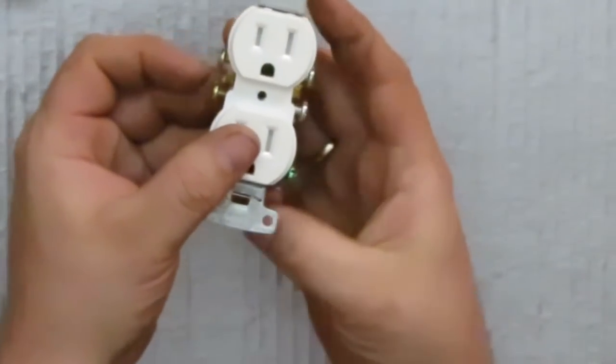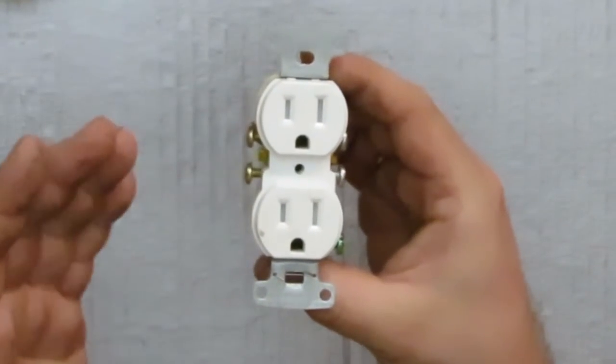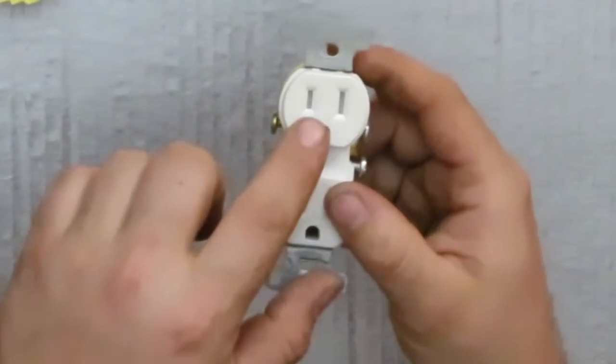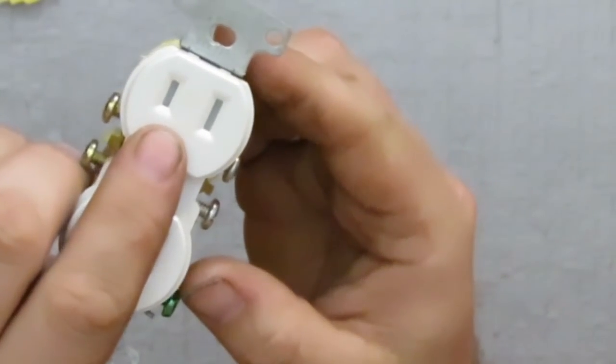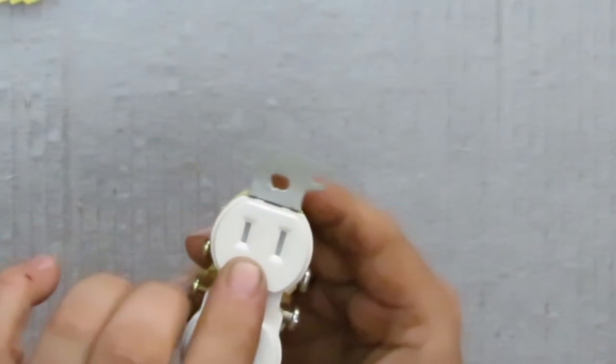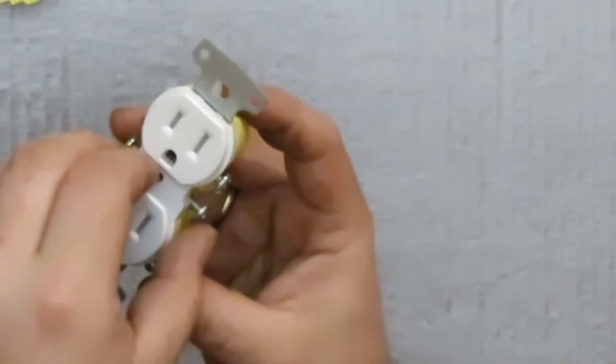Now we have our tamper-resistant receptacle. And if you look inside the plug-ins, there's a white. There's no holes through.